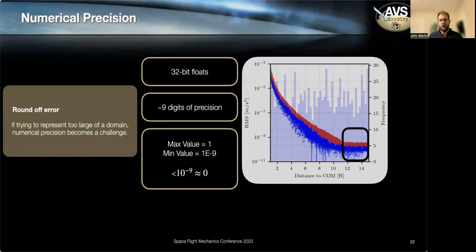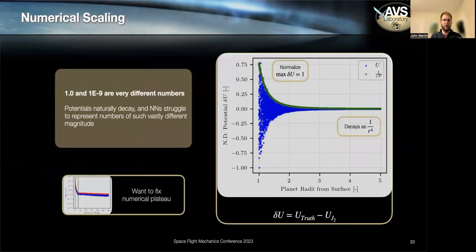Well, this has to do with the numerical error. These neural networks are typically trained with 32-bit floats. And there comes a point where we're trying to produce values that are so small, it just clips them and calls them zero. Just the numerics of the network are sort of ill-conditioned. And again, this just has to do with the fact that potentials and accelerations naturally decay.